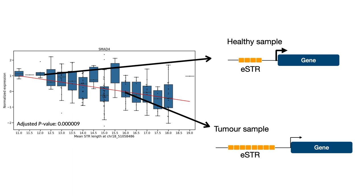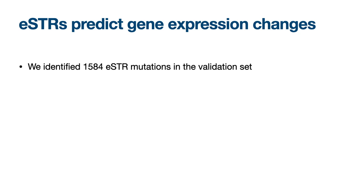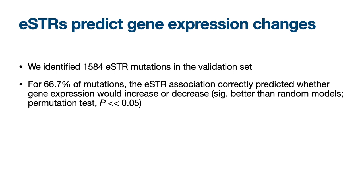This is what we wanted to test — whether ESTR associations could actually be used to make these kinds of predictions. We identified ESTR mutations in our validation set and found 1584 such mutations. For 66.7% of these mutations, the ESTR association correctly predicted whether gene expression would increase or decrease in the tumor sample, which was significantly better than random models.